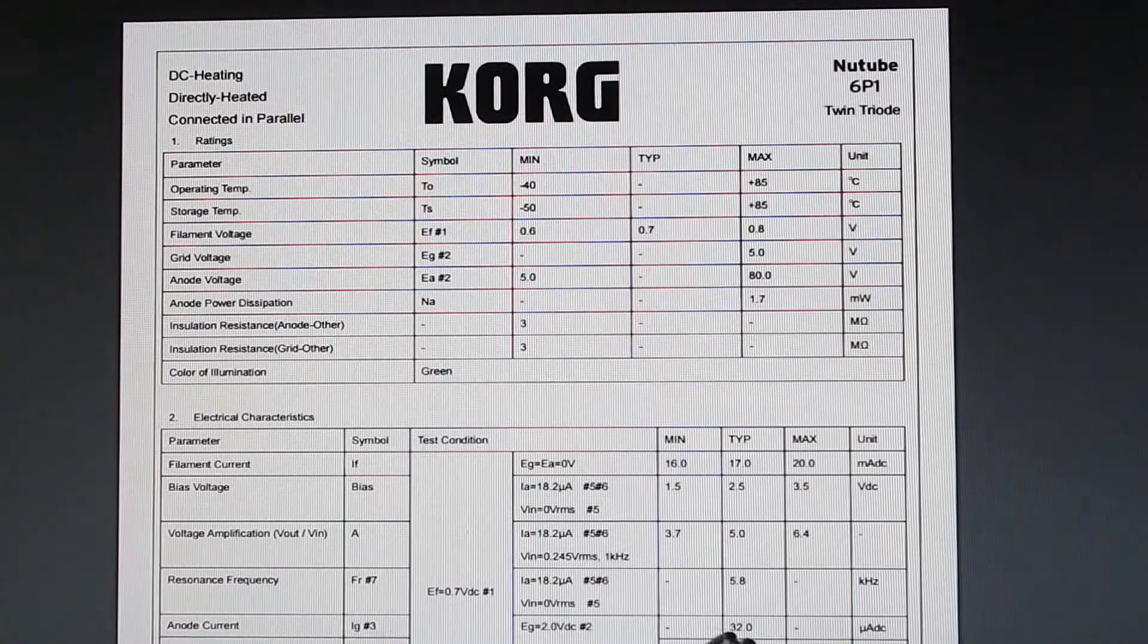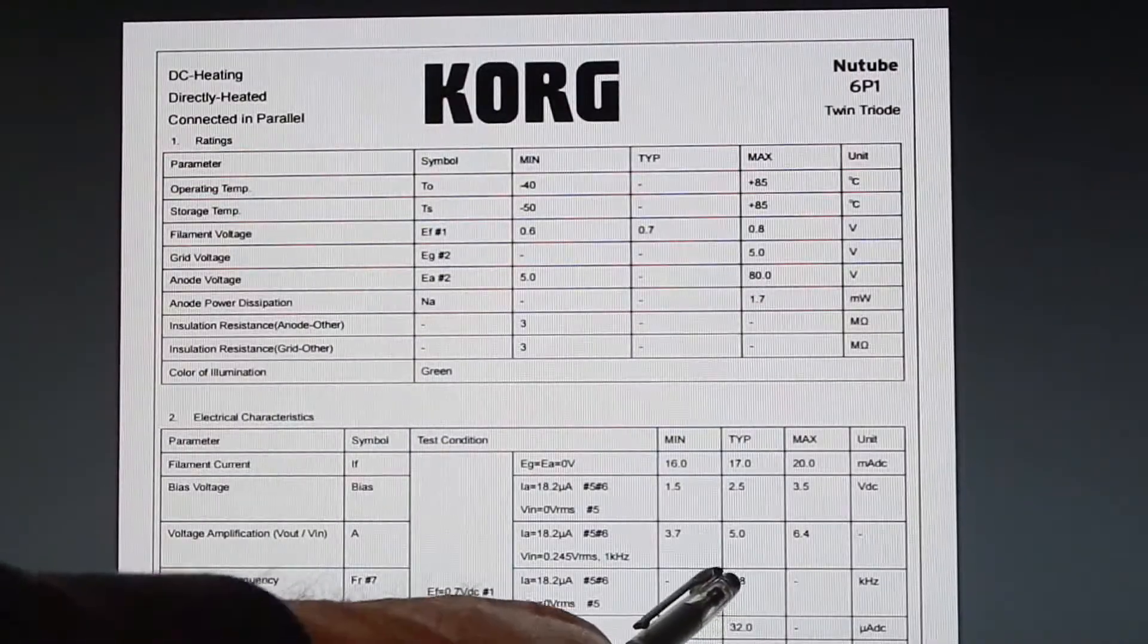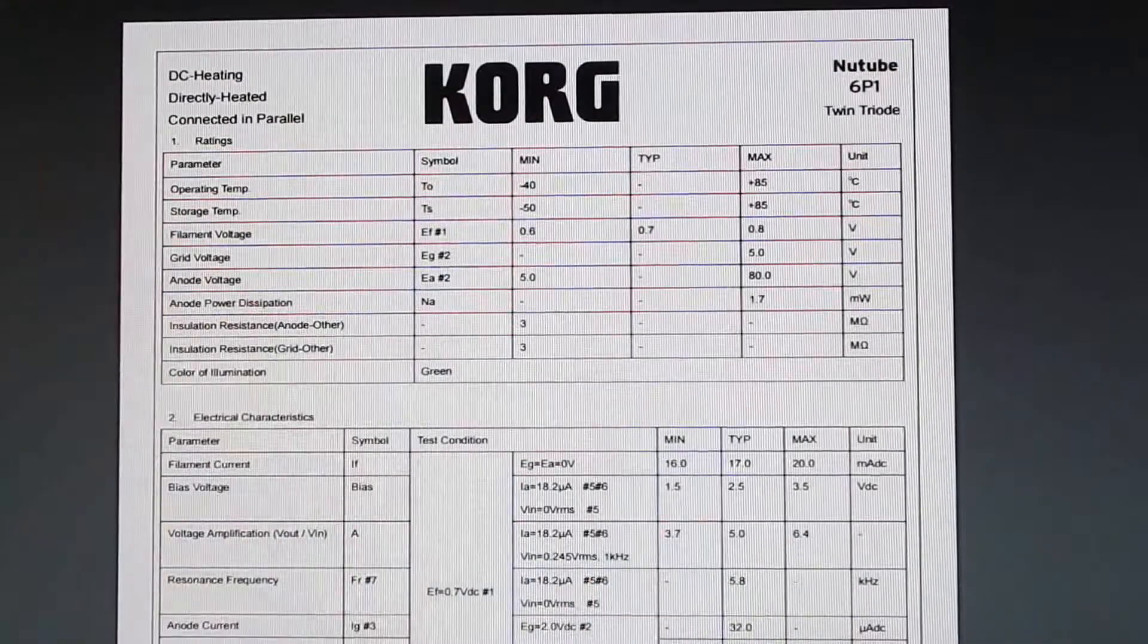Symbol FR number 7. Resonant frequency of 5.8 kilohertz. That could be an issue.